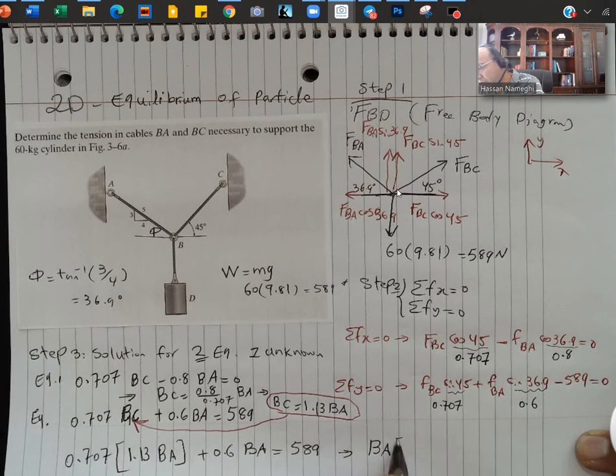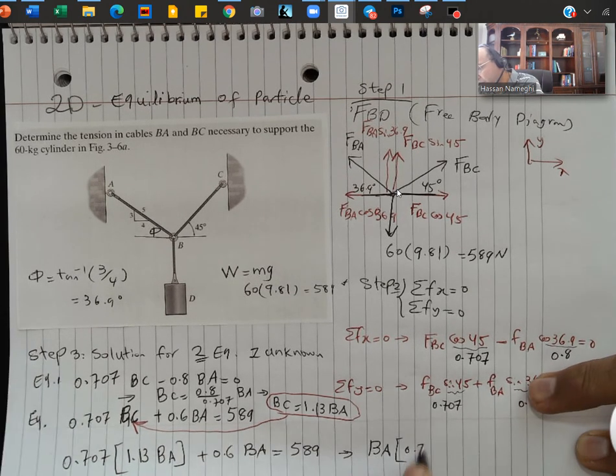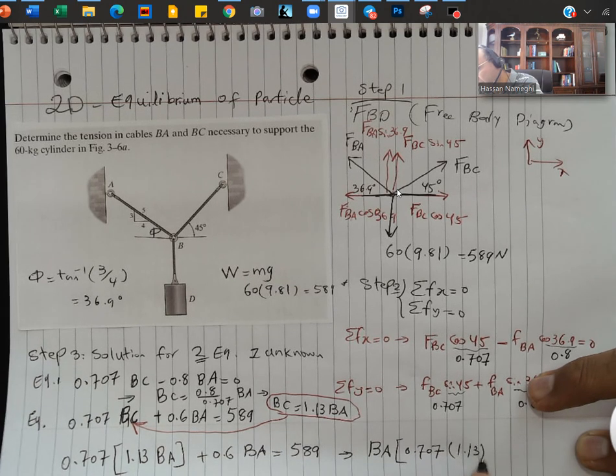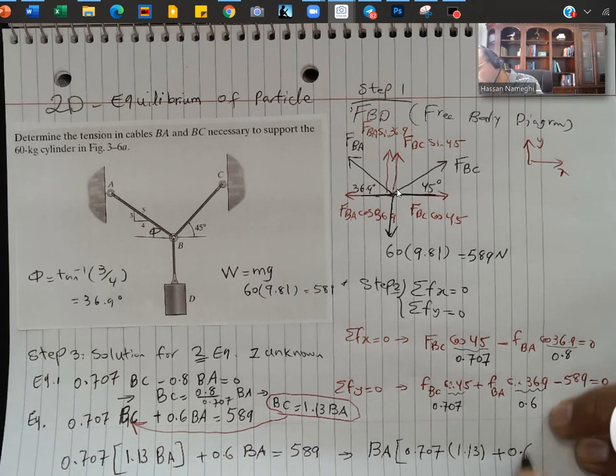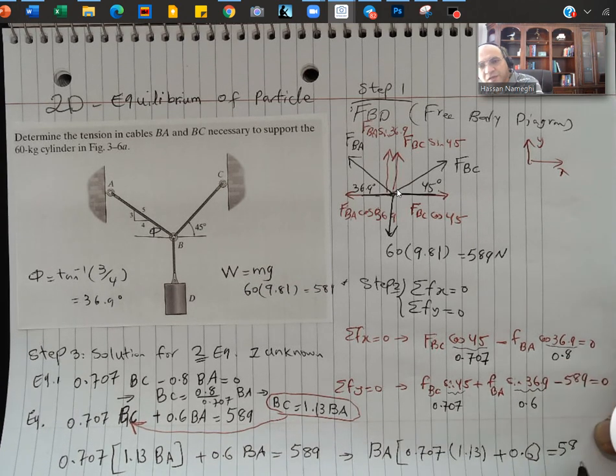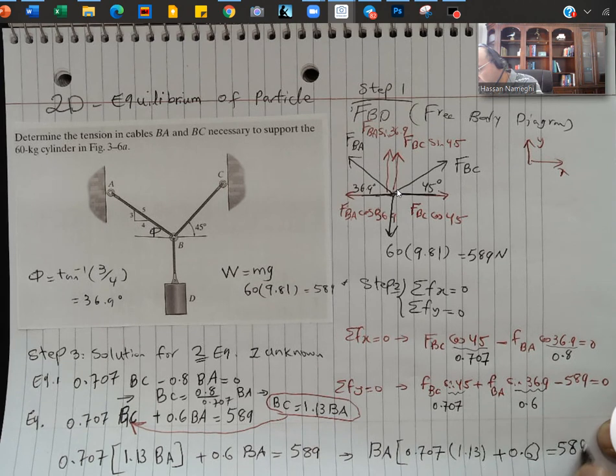If I factor BA, I'm going to get BA into 0.707 times 1.13 plus 0.6 is equal to 589.